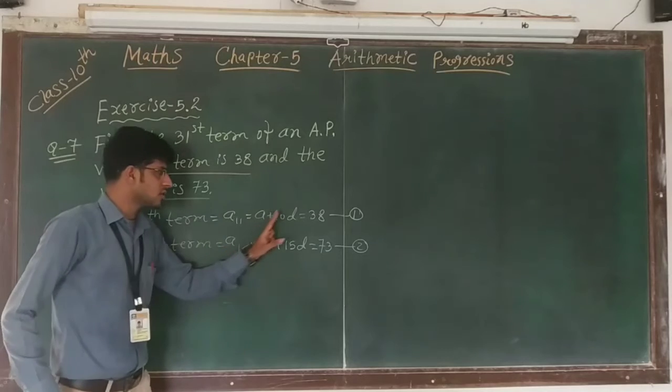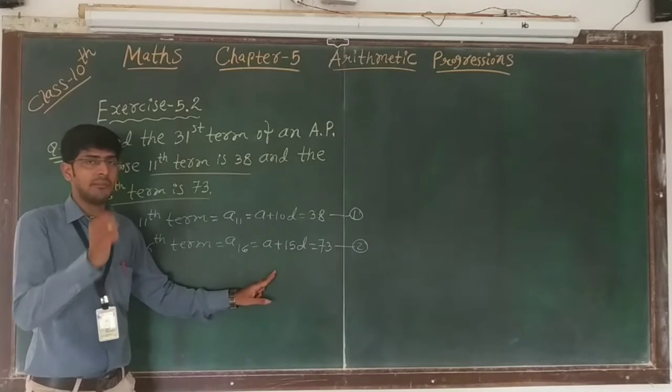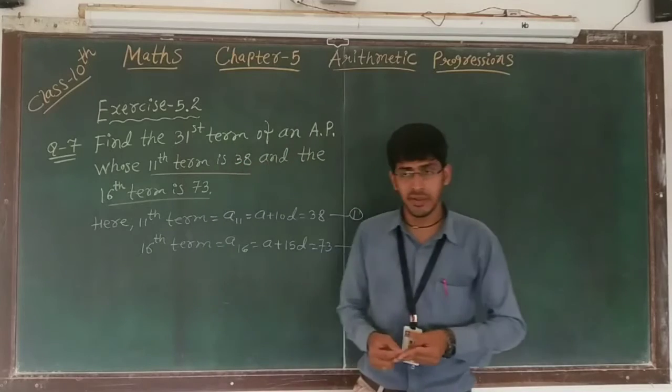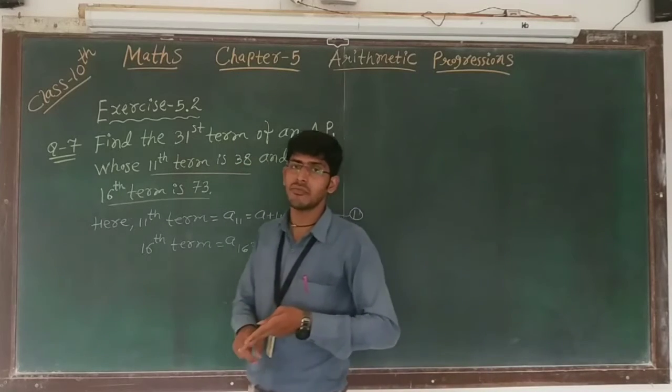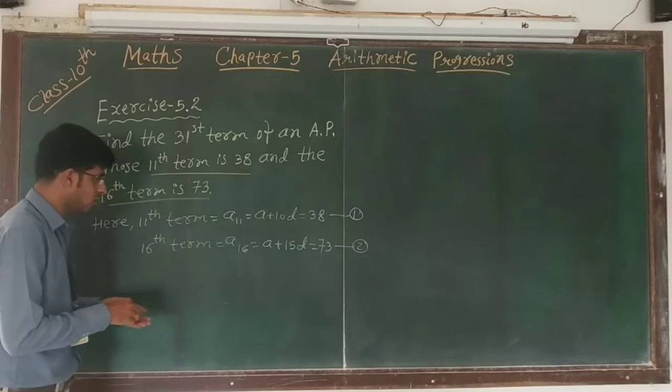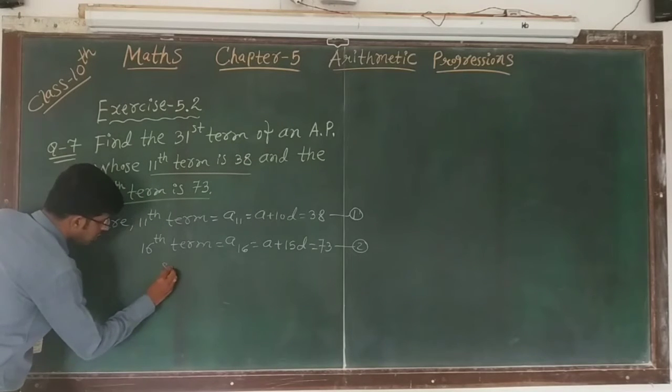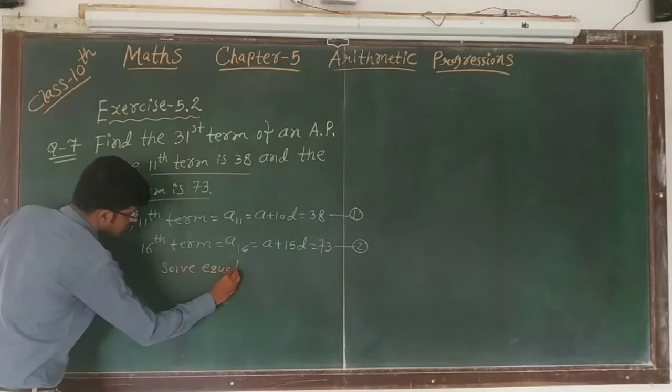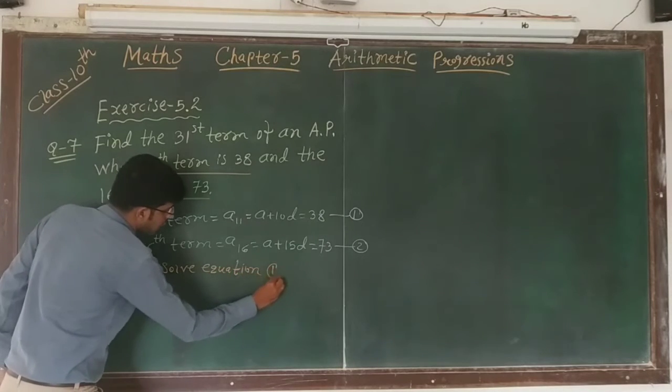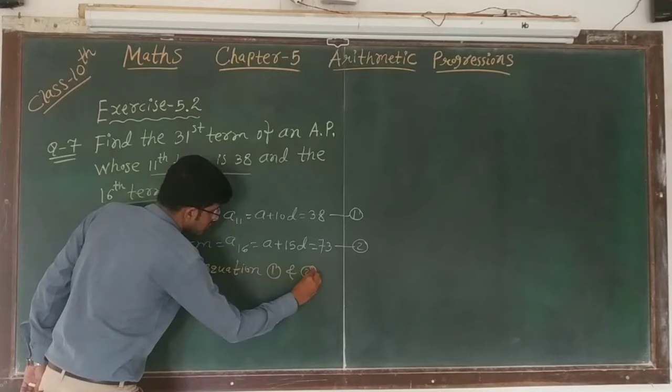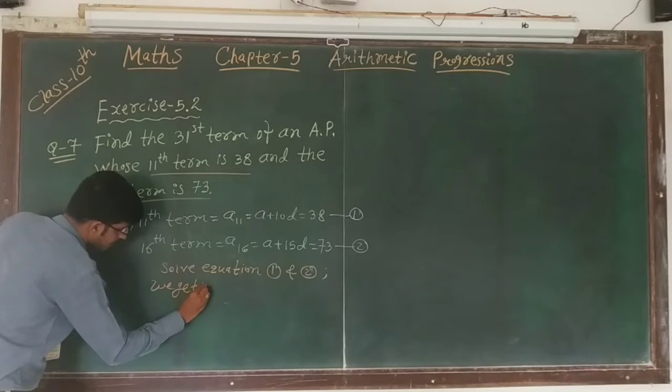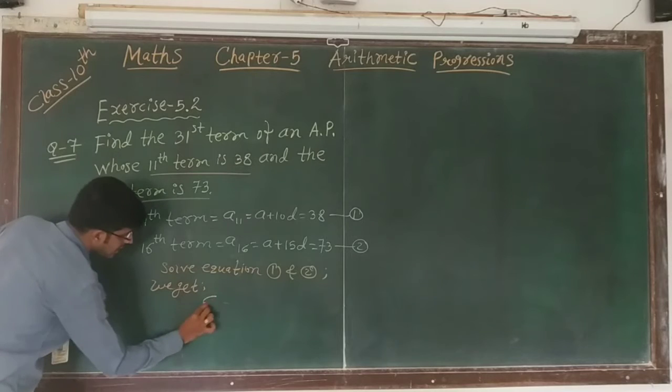Now we will solve equation number 1 and 2 by using elimination method and find out the first term and common difference. It means we have to find out a and d from these 2 equations. Now write down, solve equation 1 and 2, we get a plus 10d is equals to 38.